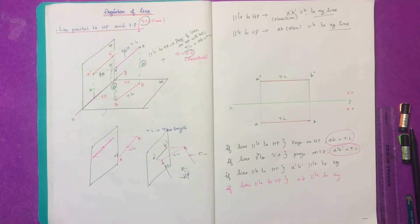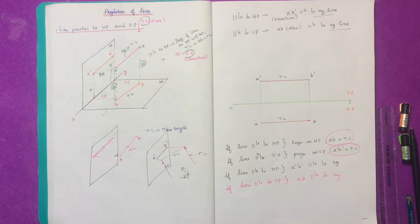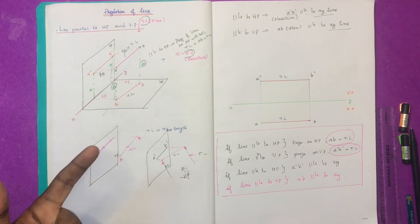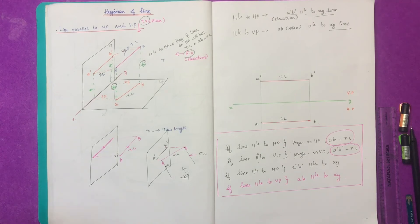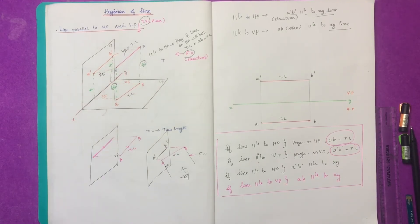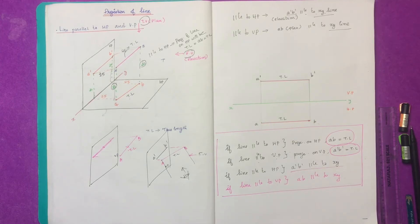It is very simple. If the line is parallel to HP, the concept is correct: A'B' will be parallel to XY. The conclusion is: in the case of true length, the projection of that line on that particular plane will be the true length. If the line is parallel to HP, the elevation is parallel to XY. If the line is parallel to VP, the plan will be parallel to the XY line.